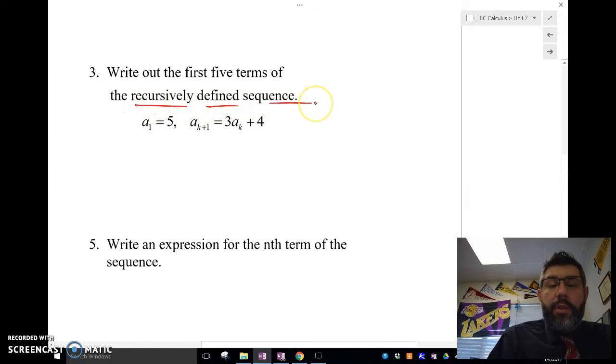Here we have a recursively defined sequence. A recursively defined sequence is a defined sequence where each term is defined by the previous term. If a_1 = 5, what this is saying is that each k+1 term is equal to 3 times the previous term plus 4. So if I wanted the second term, a_2, I'd have a_2, which is 1+1 which is 2, would be 3 times the previous term a_1 plus 4. So this is 3 times 5 plus 4, which is 19.